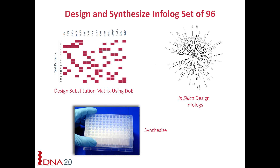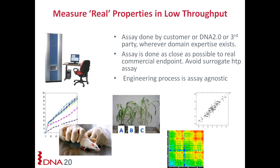The design is synthesized in orthogonal sets and tested for enzyme activity. Because you're working in a very information-rich way, you're able to measure function in a really low-throughput, high-quality assay — something that's close to a commercial endpoint assay. This is typically done by the customer, since it requires deep domain expertise, or sometimes through a third party. Instead of doing a FACS-sorter screen, you can actually inject things into mice and measure how they perform in a real in vivo system.